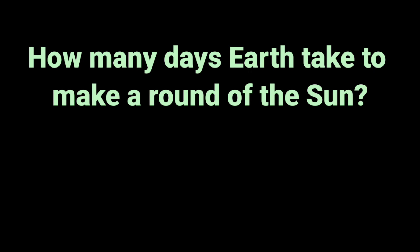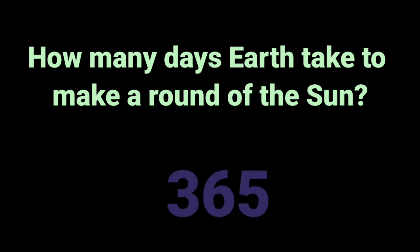How many days Earth take to make a round of the sun? Three hundred sixty-five.